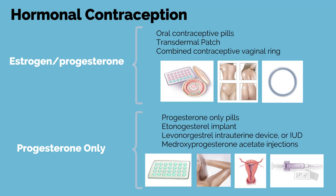Hormonal contraception options include estrogen-progesterone containing products such as oral contraceptive pills, the transdermal combined hormone patch, and the combined hormone vaginal ring. Progesterone-only options include progesterone-only pills, etonogestrel implant, levonorgestrel intrauterine device (IUD), and medroxyprogesterone acetate injections.